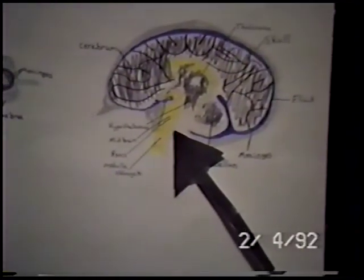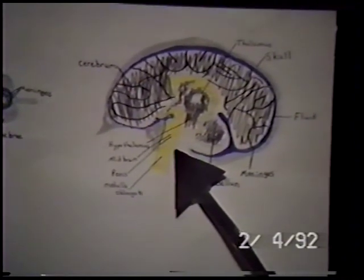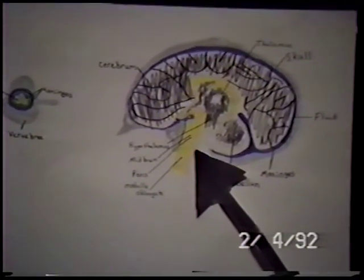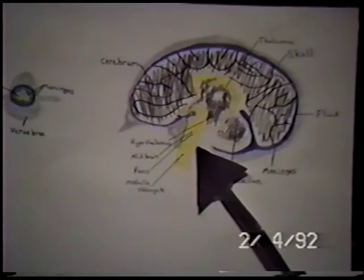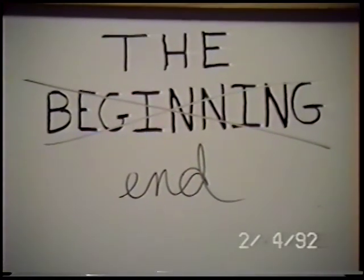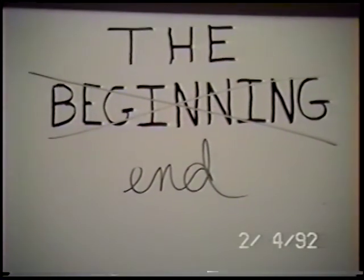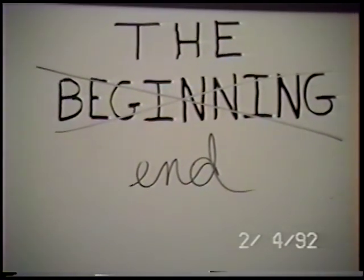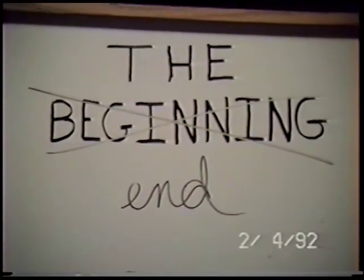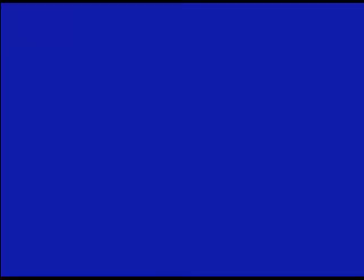The pons and midbrain are pathways to the brain. The medulla oblongata controls the involuntary activities. This has been a production of Science America. Thank you.